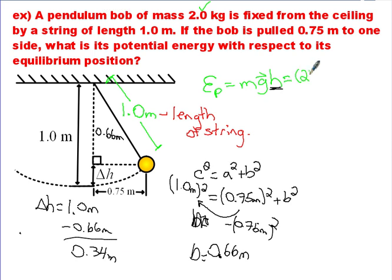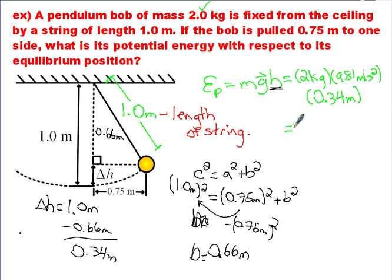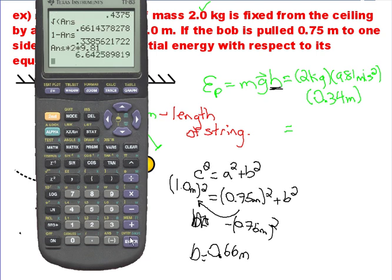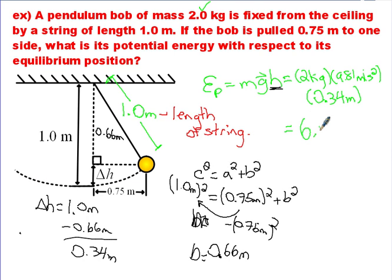The mass is 2 kilograms, the gravitational field strength is 9.81 m/s², and the height is 0.34 meters. Multiplying these gives our gravitational potential energy. As long as you're careful with the Pythagorean formula step, the answer to 2 significant figures is 6.6 joules. Now that you know the potential energy, you could even convert that to kinetic energy to find the pendulum's speed. For more information on pendulums and energy, check out my website, ldindustries.ca. Thank you.